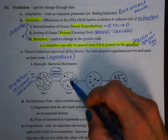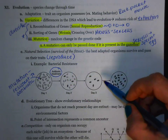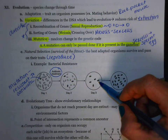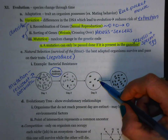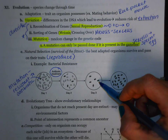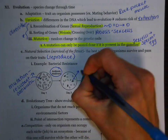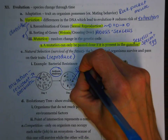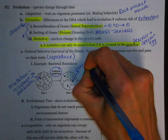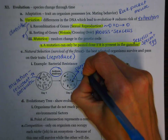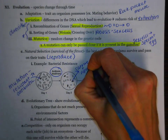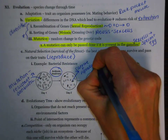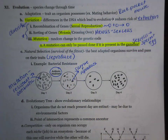As time goes on, you'll notice the same trend. There are less and less white, but there are more and more gray. Why is that? The reason why is these gray ones were able to survive and reproduce. They kept passing on that good gene.